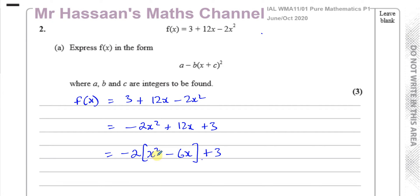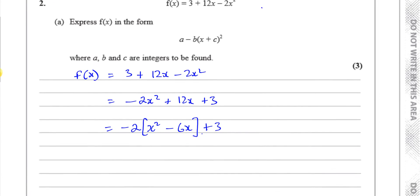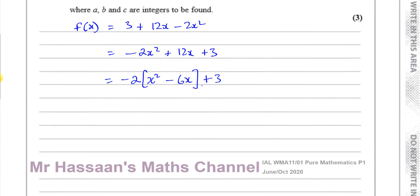I find it a lot easier to just deal with the x² and the x term. I've taken out -2 so I'm left with positive x². That was my objective — not just because 2 is a factor of both terms. Even if 2 was not a factor of 12x, I would still take out -2 to get rid of the minus sign and the 2 multiplying the x². Whatever is left gets divided by -2, giving me -6x. I haven't started completing the square yet — I'm getting ready to complete the square.